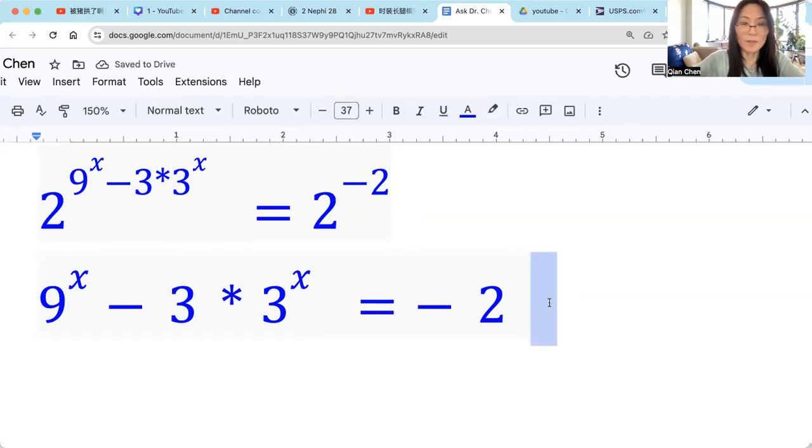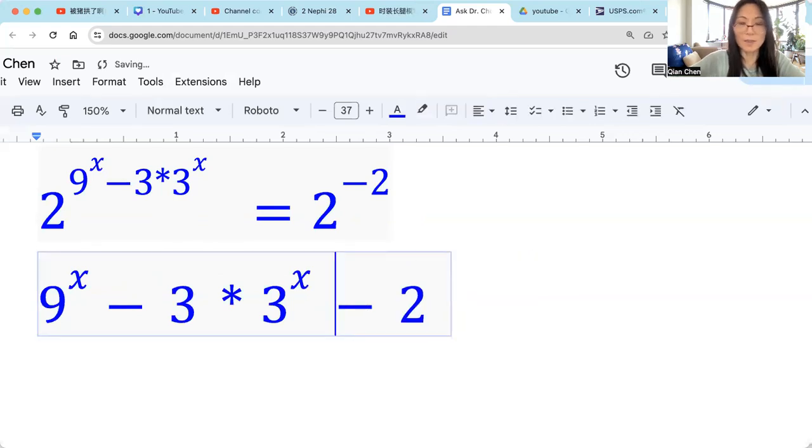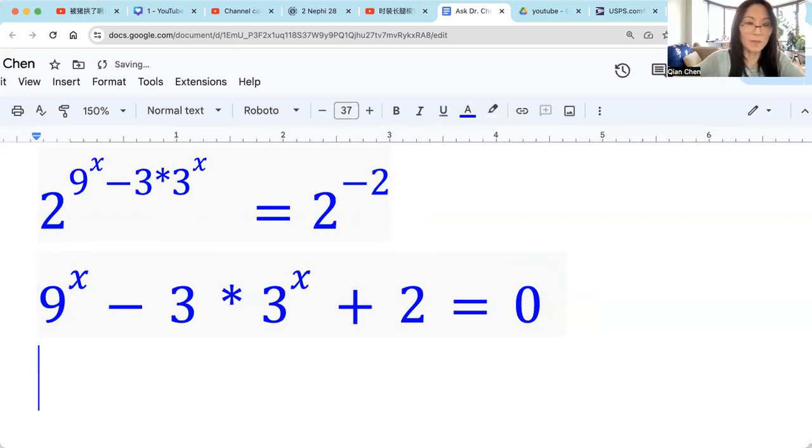So we have this. Now we want to move negative 2 to the other side, right? We add 2 on both sides. So it becomes plus 2 equals to 0. Now let's look at 9. Allow me to copy and paste. So you have to leave some crucial steps here.